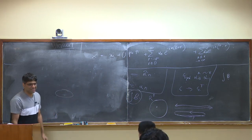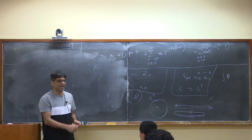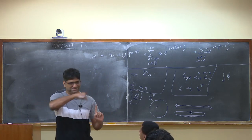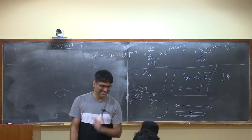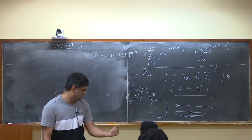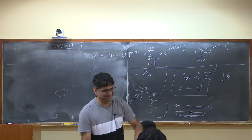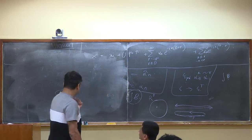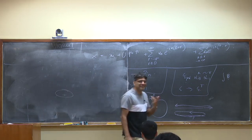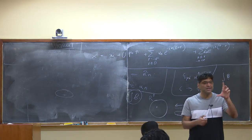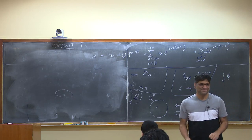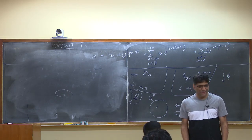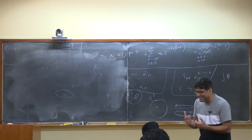A normal closed string that loops on itself doesn't carry charge — it's like a dipole. But a string winding a spacetime circle carries a genuine winding-number charge: winding number one is different from winding number minus one. In the unoriented theory we'll see that closed strings can break, so winding number is not a conserved charge.